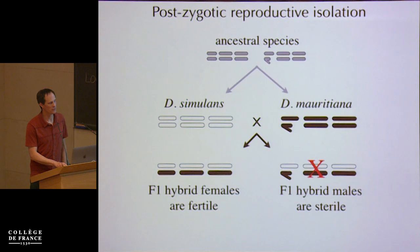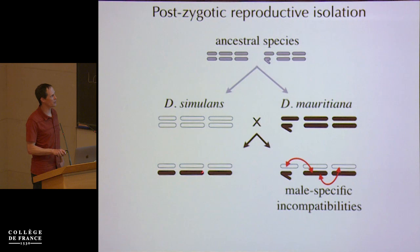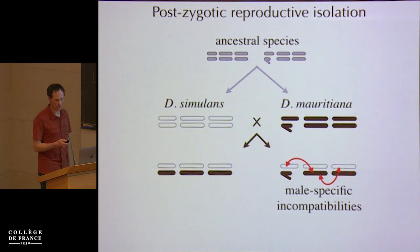We've had a great introduction on Dobzhansky-Muller incompatibility, so I don't need to go through that. Just to highlight that the sterility is a result of incompatibilities — interactions between alleles from simulans and *mauritiana* that don't work well together — and in this case cause male-specific reproductive failure.